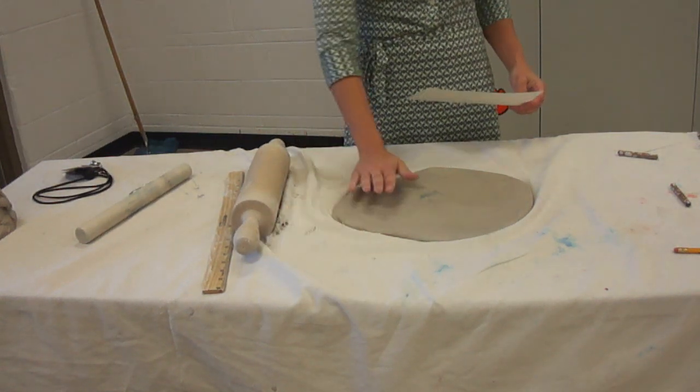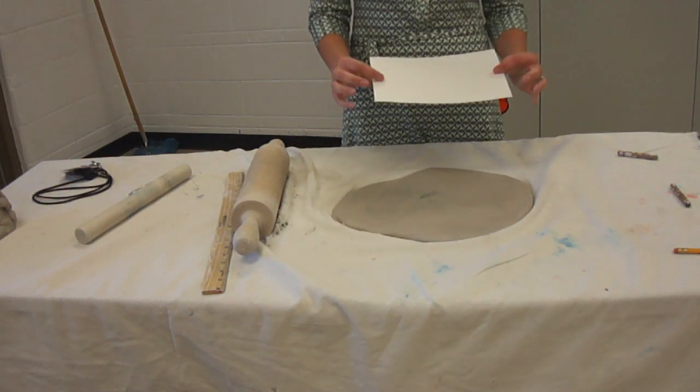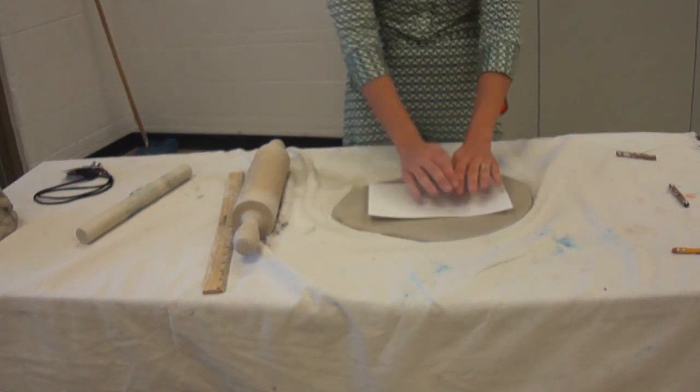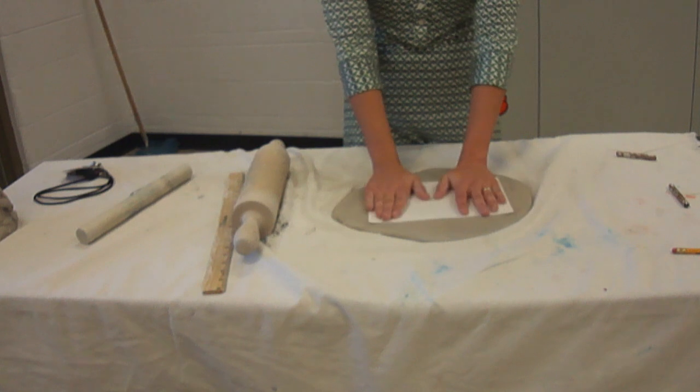Now that I have my slab all rolled out, the next step is we're going to take our paper template and put it directly down on the top of your clay.